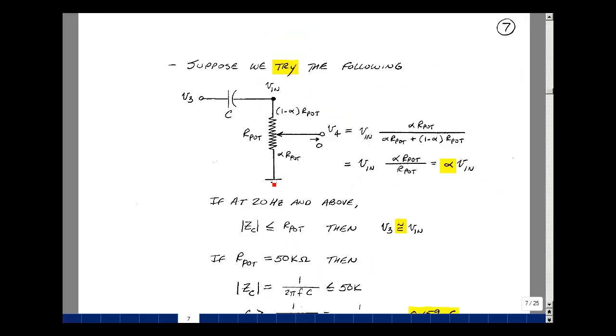We'll use a pot as a volume control. We'll characterize the pot as a two-valued resistor whose value is a percentage of the total pot resistance we called alpha, which goes between 0 and 1, and the remaining part is 1 minus alpha times R pot. The voltage at V4 is V in times alpha. When we're in the middle position, we get half the voltage. At a quarter position, we get a quarter of the voltage.